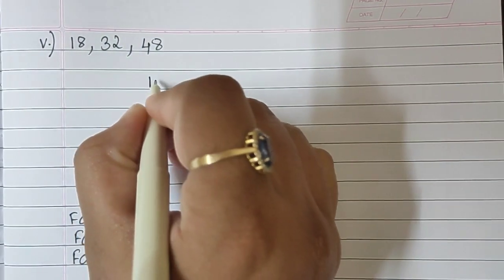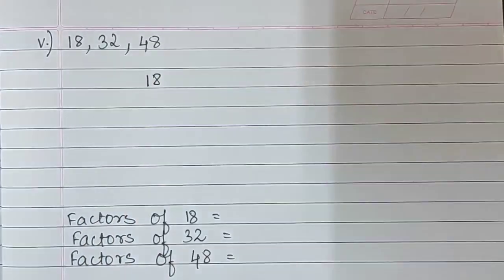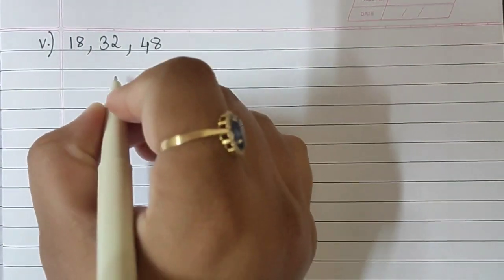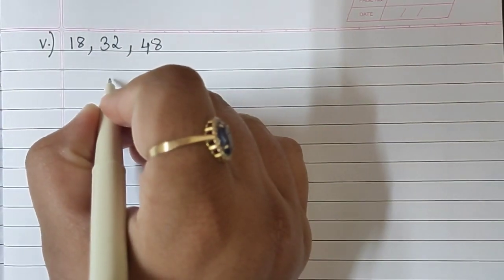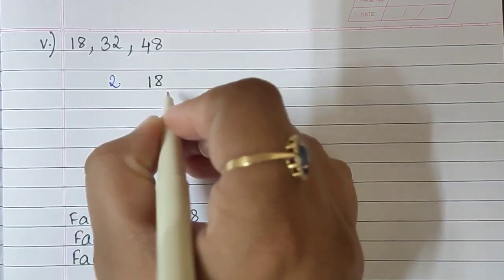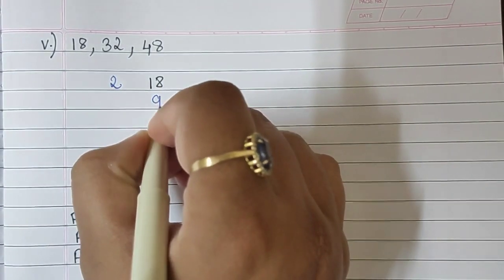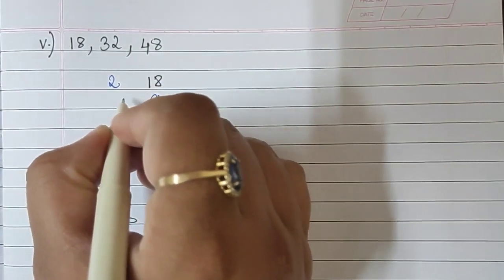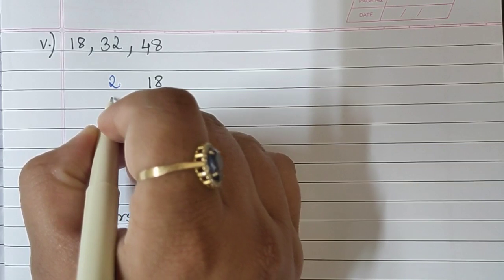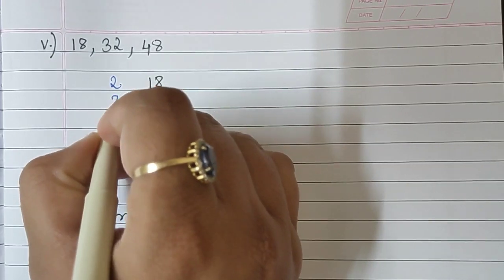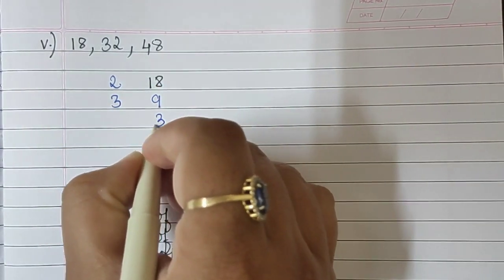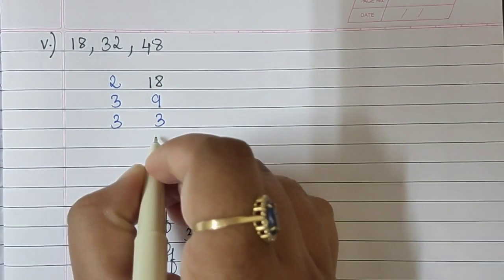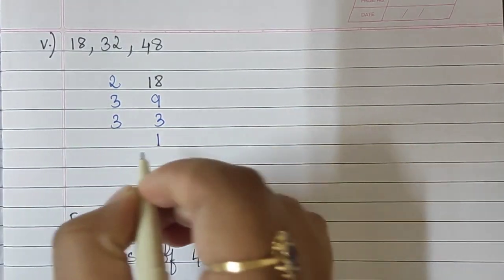So I write 18. 2 nines are 18, 3 threes are 9, 3 ones are 3.